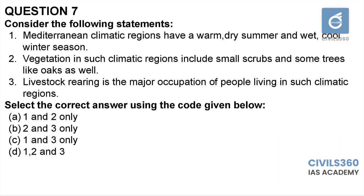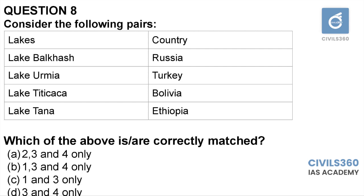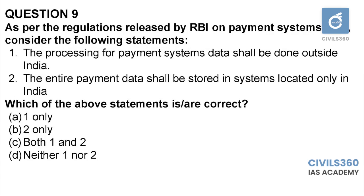Eighth question: lakes and their corresponding countries. Lake Balkash is given as Russia, Lake Urmia as Turkey, Lake Titicaca as Bolivia, and Lake Tana as Ethiopia. This is a factual question. Lake Balkash is actually in Kazakhstan, and Lake Urmia is in Iran — so statements one and two are wrong. Statements three and four are correct. Eighth question: option C — three and four only.